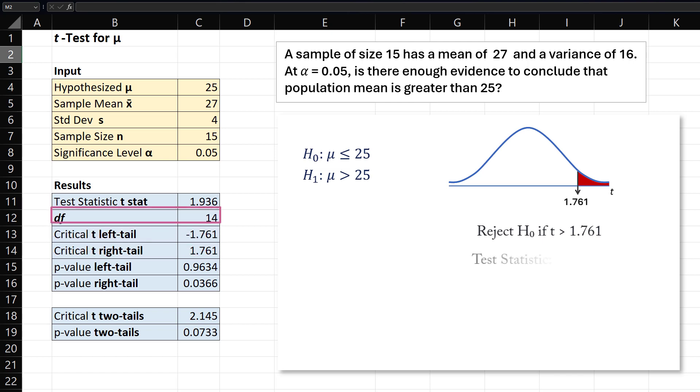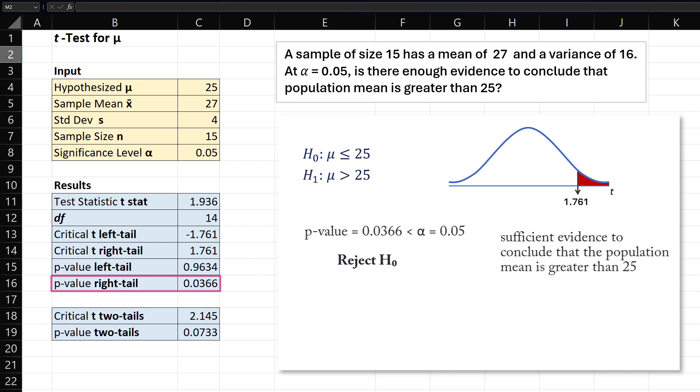The test statistic here is 1.936, which falls into the rejection region. The right-tailed p-value here is also less than our alpha of 0.05, indicating we should reject the null hypothesis. We have sufficient evidence to conclude that the population mean is greater than 25 at alpha equals 0.05.